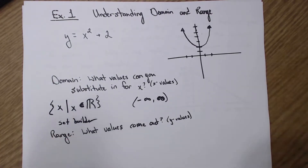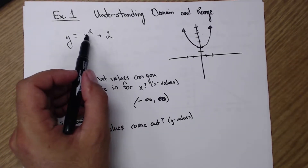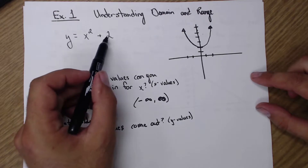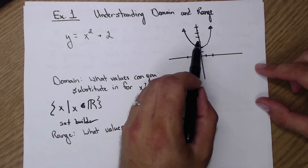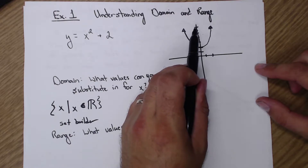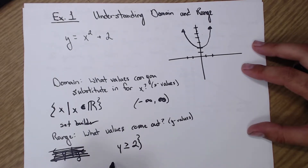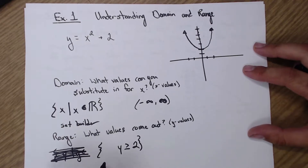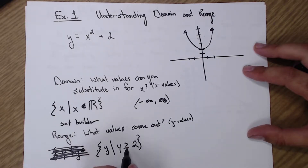So what values come out, or what are our y values? If I plug a number in, even if it's negative, I square it — now it's positive. A positive number plus 2 is always going to be positive, so we won't have any negative y values. Looking at the graph, we start at positive 2 and go up from there. So y must be greater than or equal to 2. We start and end with squiggly brackets, and we're talking about y values, so we have a set of y's such that y is greater than or equal to 2.